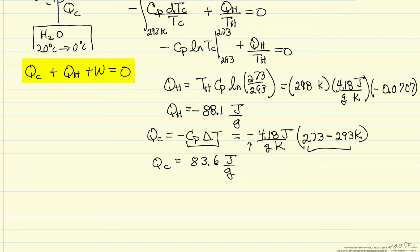Now I can go back to the first law. Again, this number is greater than zero, as we said it would be for the system being the heat pump. So 83.6, QH is minus 88.1, and these are joules per gram, plus W equals zero.